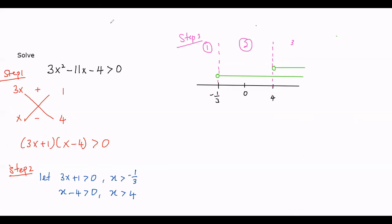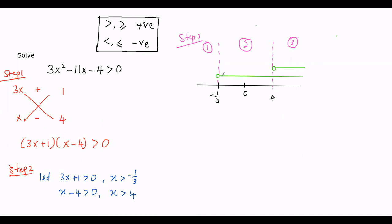Here are some short notes: if the function is greater than or greater than or equal, we assume it's positive; if it is less than or less than or equal, we assume it's negative. For the first graph, the region to the left of −1/3 is negative. For x > 4, the region to the left is also negative. The first factor is positive between −1/3 and 4, while the second factor remains negative there. Beyond 4, both factors are positive.